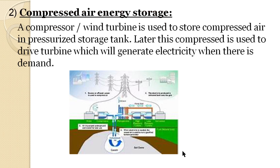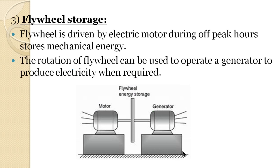The second mechanical type is compressed air energy storage, where a compressor or wind turbine is used to store compressed air. The third mechanical type is flywheel storage, which is driven by an electric motor to store mechanical energy.